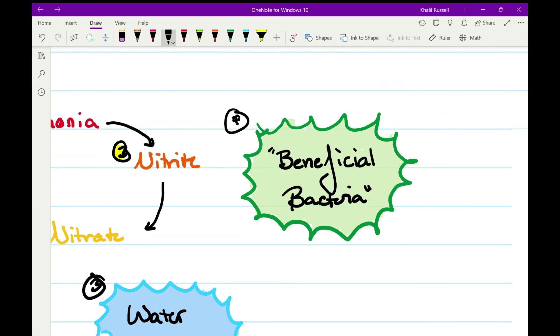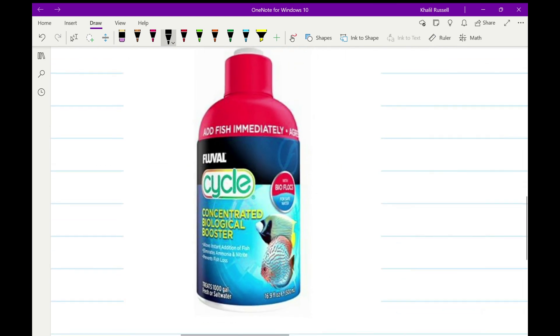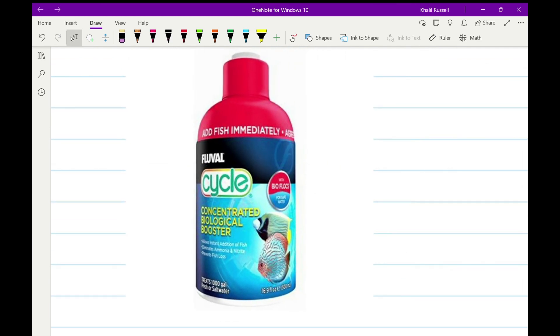And then of course, number four, beneficial bacteria. The most important piece of this whole cycle. You may have heard people talk about it in the hobby. This is what they're talking about. The beneficial bacteria is what actually does the turning of one chemical into the other chemical. You could not go from ammonia all the way to nitrates unless you had this beneficial bacteria in your aquarium.